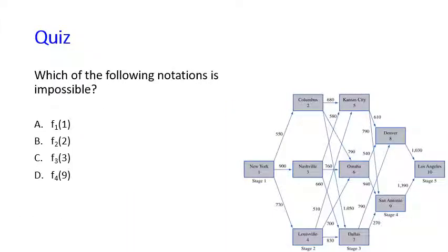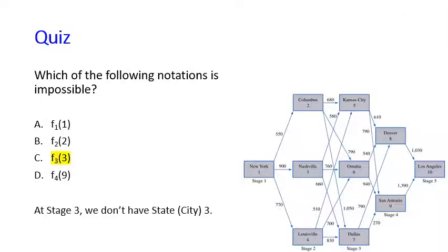The next question: which of the following notations is impossible in our example? The answer is f(3,3), because in our example at stage 3 we do not have city 3, so it is impossible to have f(3,3).